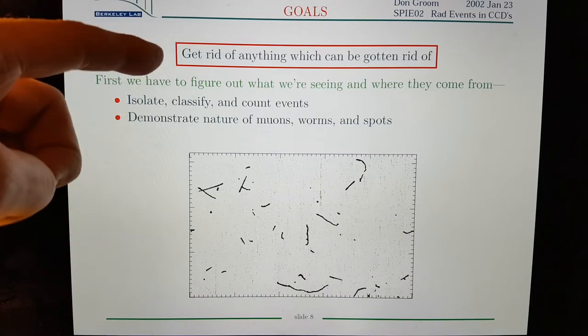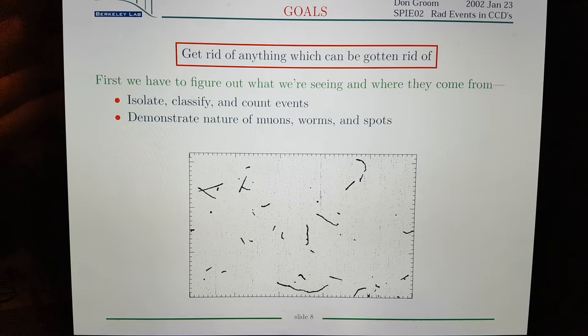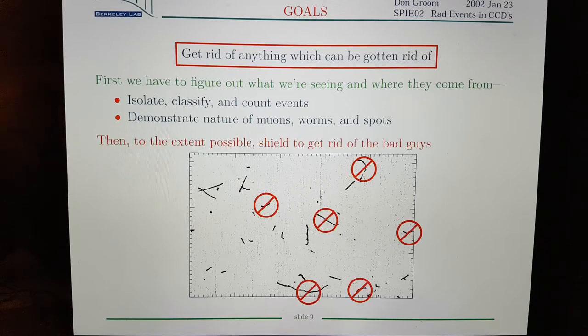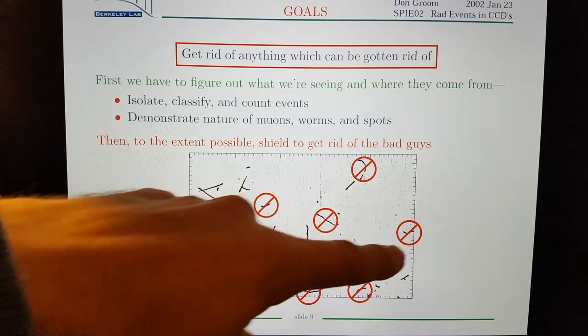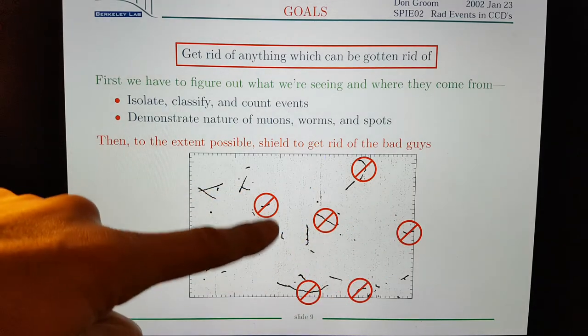The trick is to get rid of anything that they can get rid of automatically and then to try and narrow it down to what are actually muons. So these squiggly tracks are not muons and I'll go into that a little bit later.